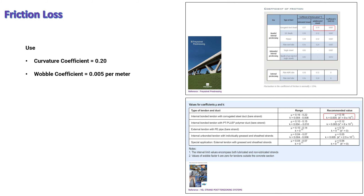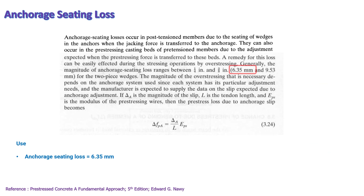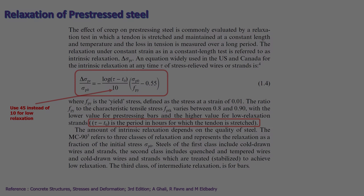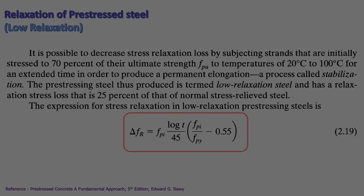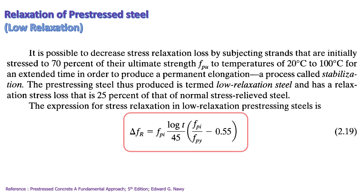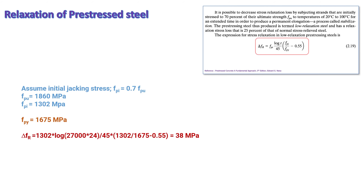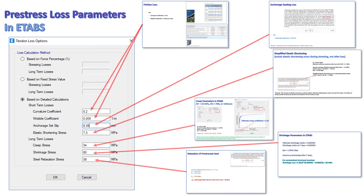The parameters for friction loss and anchorage seating loss are as shown here. Both concrete and steel under sustained stress can exhibit creep behavior. The effect of creep on pre-stressing steel is commonly called relaxation of pre-stressed steel. The behavior of relaxation of pre-stressed steel over time could be expressed by the following equation. The example calculation for relaxation of pre-stressed steel is shown here. All the short-term loss parameters and long-term loss parameters for the detailed calculations for tendon loss in ETABS are now obtained.